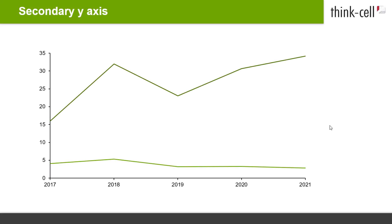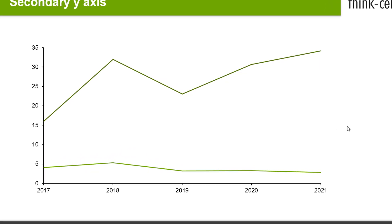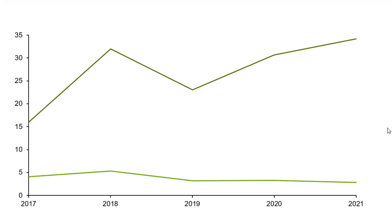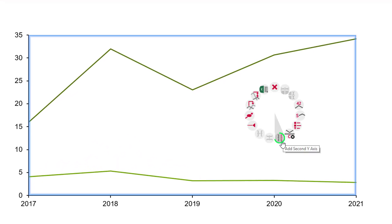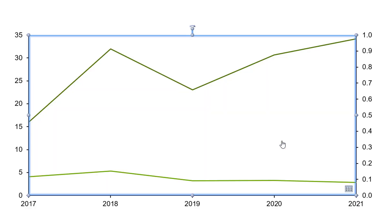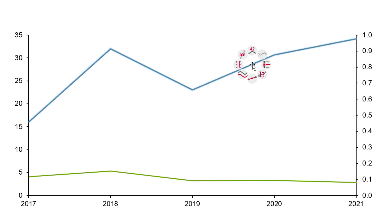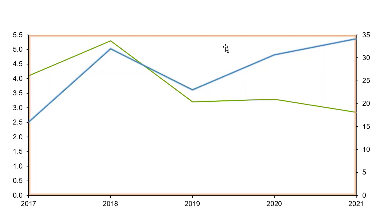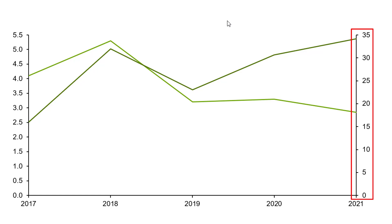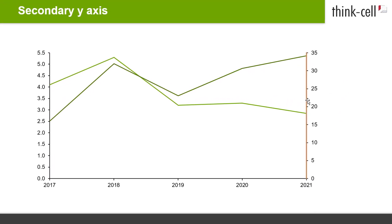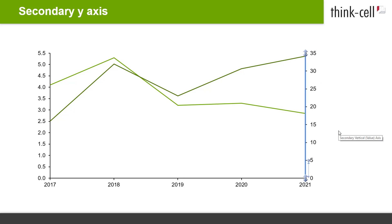Line charts and combination charts may have a secondary Y-axis with a separate scaling. If it is not already there, insert a second Y-axis by right-clicking on the chart and picking Add Second Y-axis. You can define which line or column should be associated with which Y-axis by right-clicking on a line or column and selecting Set to Right Axis. The scaling of the respective axis is automatically adapted if necessary. To delete an axis, just select it and hit the Delete key.